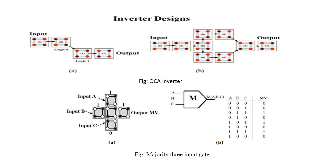Similarly, we have implemented another inverter logic based on QCA. Applying the same logic, there are no 2 adjacent electrons placed together. Due to that, the 2 electrons are repelled and this is carried out accordingly. Here we give input as logic 0, but we can observe that we get logic 1 as output.